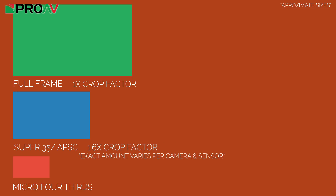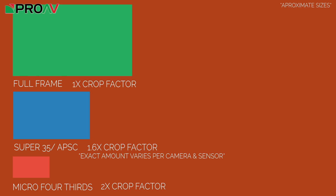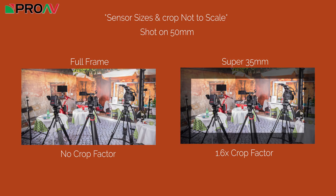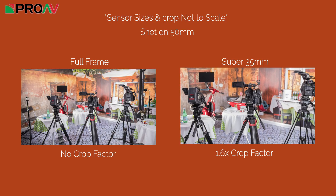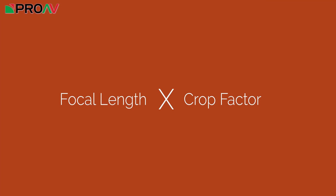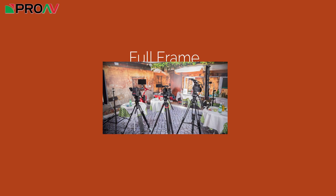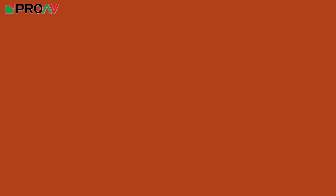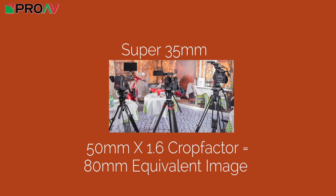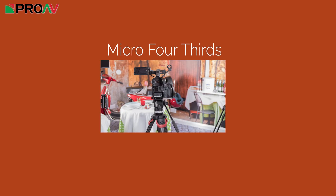Where this gets a little confusing is when people talk about the crop factor of a sensor. Full frame is used as the standard size, then APS-C or super 35mm is roughly a 1.6 times crop, then micro four thirds is about a 2 times crop. When you put two shots from different sized sensors but with the same lens next to one another, it will be as if the smaller sensor was using a longer focal length — we call this the equivalent focal length. To find out what they will look like, you multiply the focal length of the lens by the crop factor. So a 50mm on a full frame shows a 50mm image, on a super 35mm it's around 80mm, and on micro four thirds it's around 100mm.